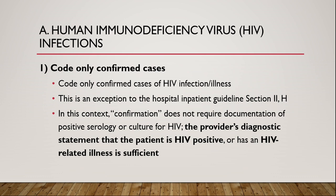Let's start with Guideline Letter A: Human Immunodeficiency Virus or HIV infections. There are common guidelines here for reporting, and it's very important to understand those guidelines because this is a common question in the exam. So let's start with the first guideline: code only confirmed cases of HIV infection and illness.